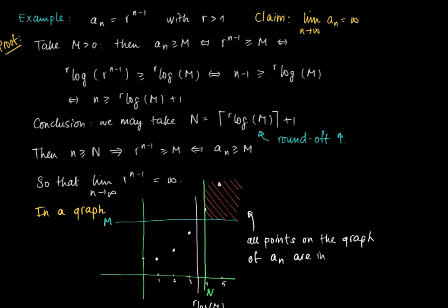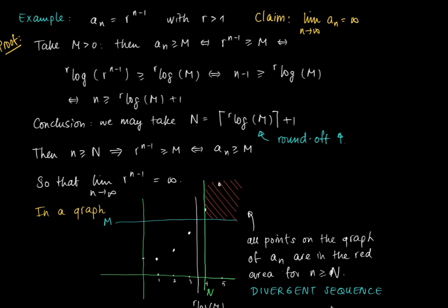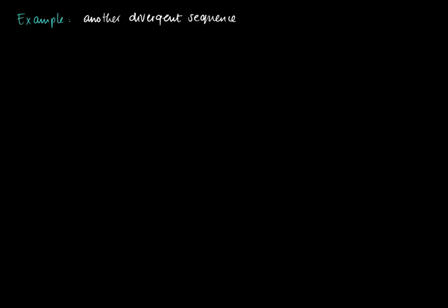When the limit as n goes to infinity of a_n is infinite, we call this a divergent sequence. The sequence is unbounded and therefore divergent. Now consider another divergent sequence: a_n = r^(n−1) but now with r smaller than −1. For instance, take r = −2.